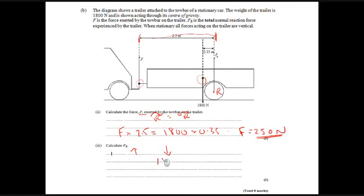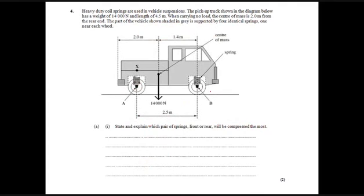So, the simplest way to do this is to just do the upwards force equals the downwards forces. So, the downwards force is the 1800. The upward forces are the 250 we've already worked out. Plus FR. So, that's 1550 Newtons. OK. But you could take moments. It's just a slightly more difficult way to do it.